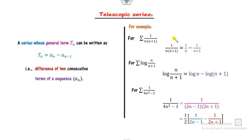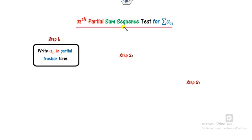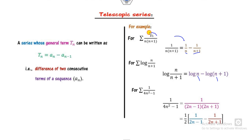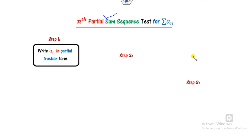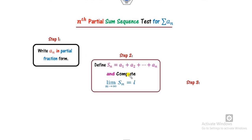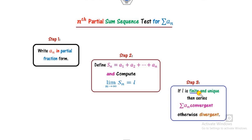You can decompose these using partial fractions. When n and n+1 are consecutive terms, the nth partial sum sequence is applicable. There is a three-step rule: first, write the general term in partial fraction form; second, define Sₙ as the sum and compute the limit; third, if this limit L is finite and unique, the series is convergent, otherwise it is divergent.